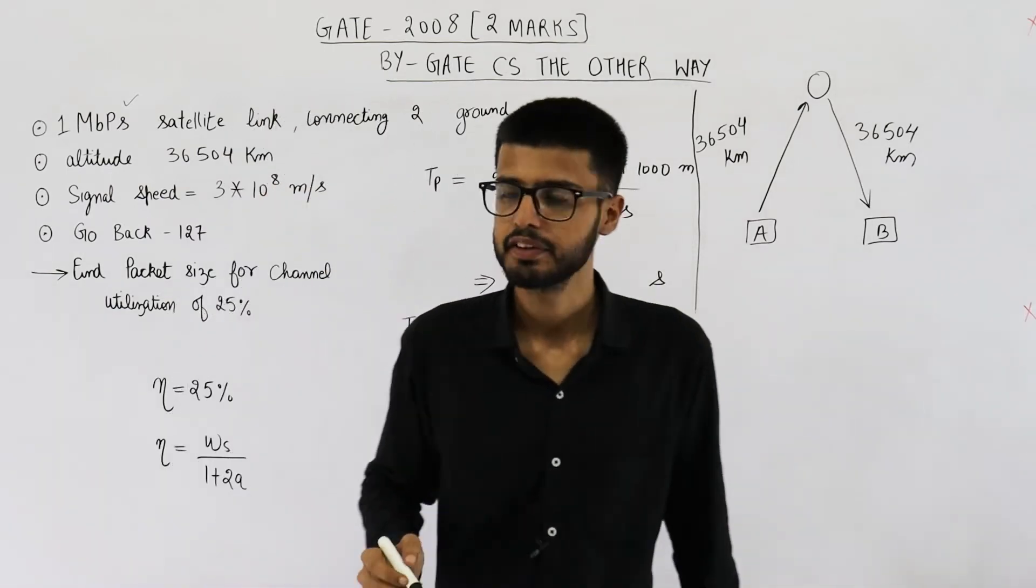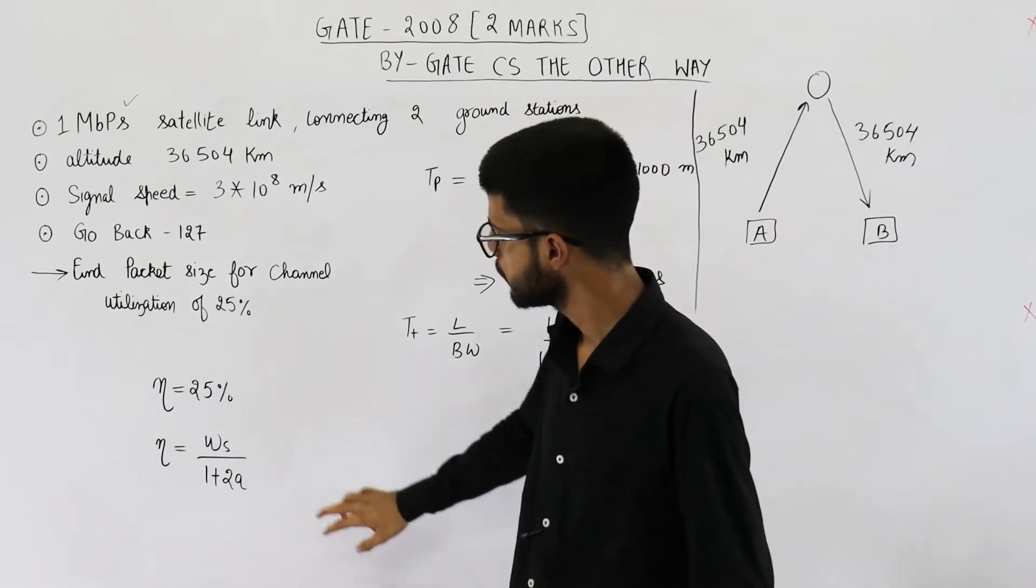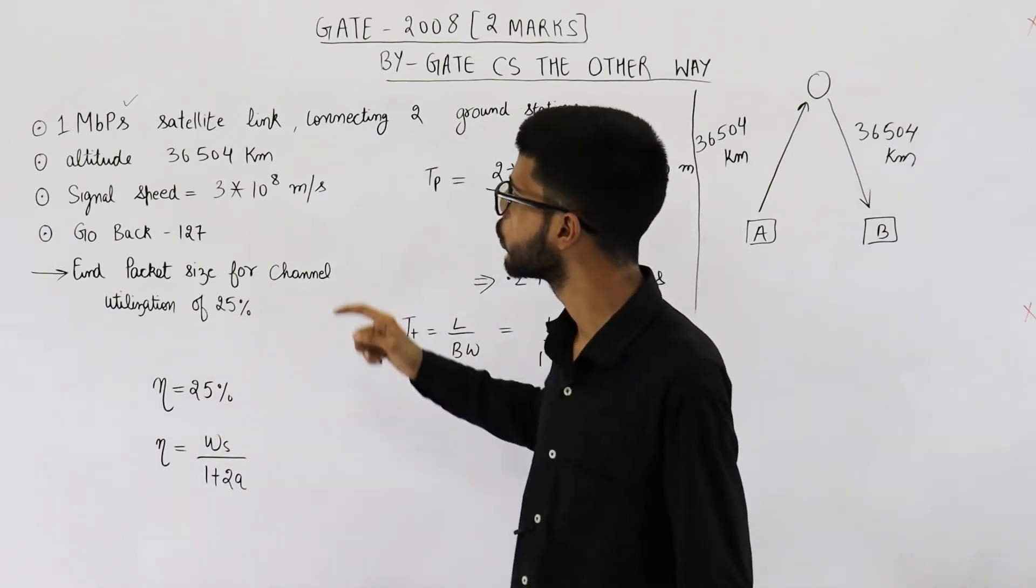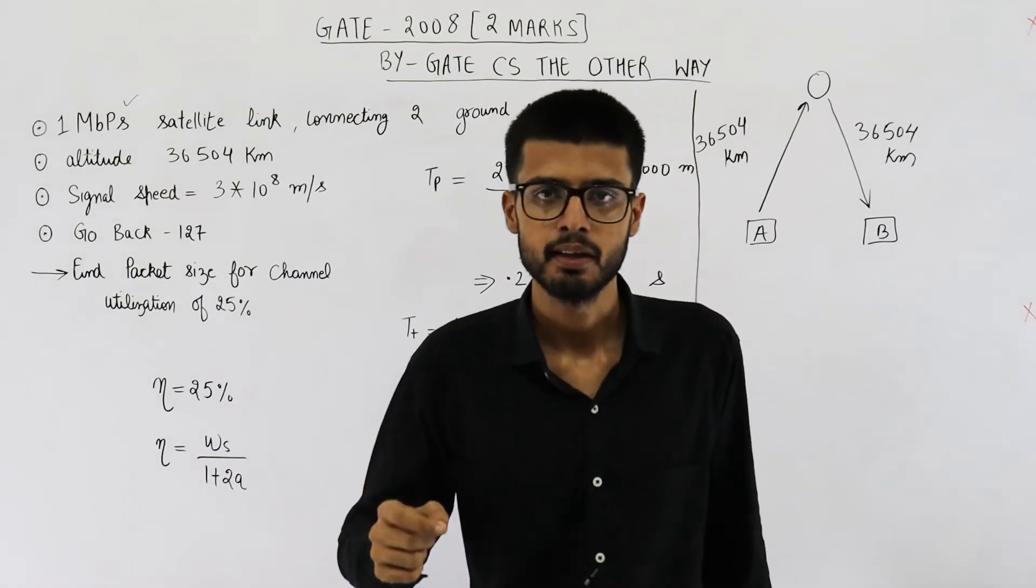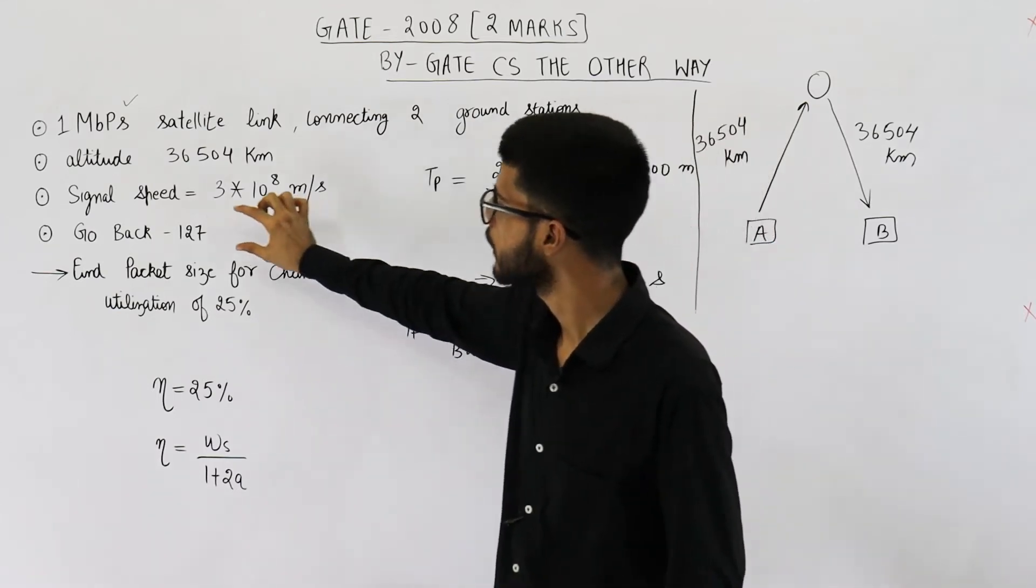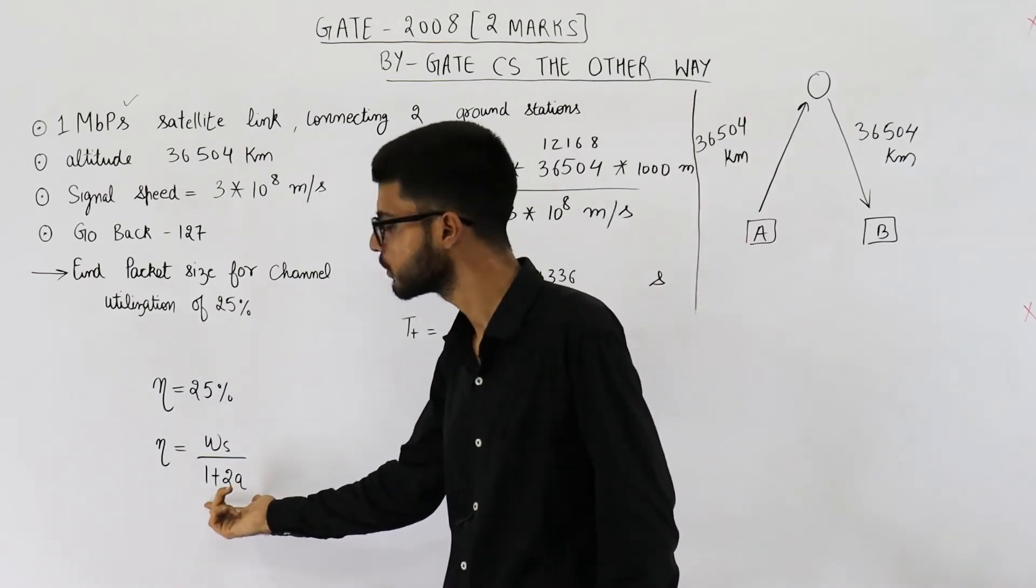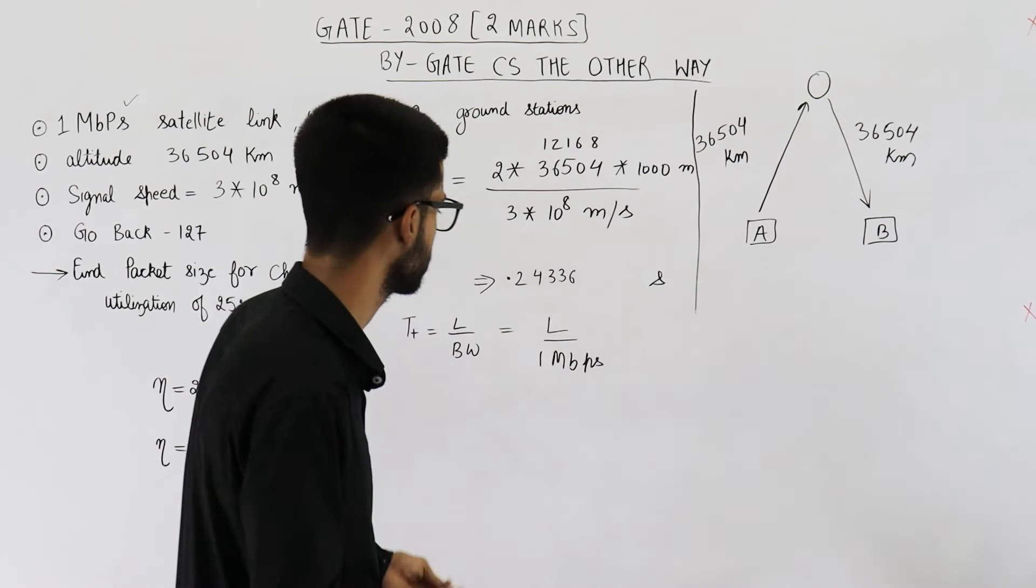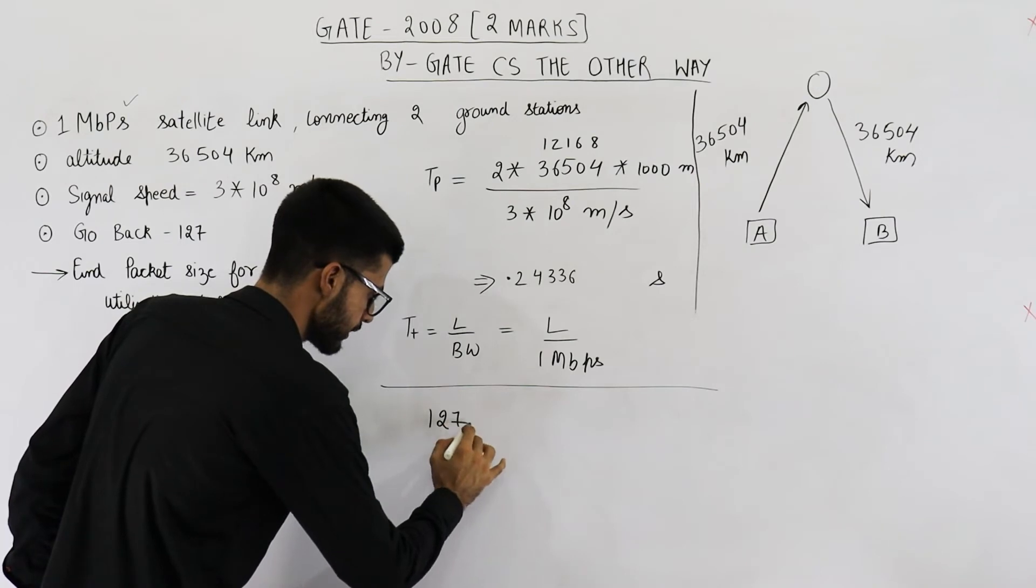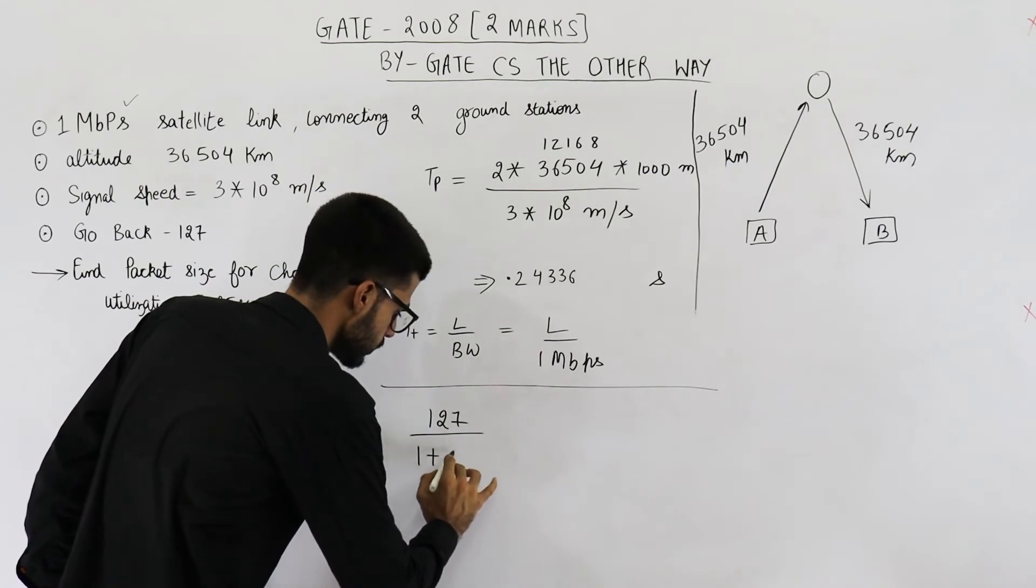Now let us find out what is the efficiency. Formula for efficiency is window size of sender divided by 1 plus 2a. That means what we are actually sending by what we can send in the best case. So in go-back-N, window size of sender is N. And in go-back-127, window size of sender will be 127. So we are sending only 127 packets. Whereas if it's the best case, we can send 1 plus 2a packets. So let's find out the efficiency. It will be what we are sending, that means 127 packets divided by what we can send in the best case, which is 1 plus 2a.